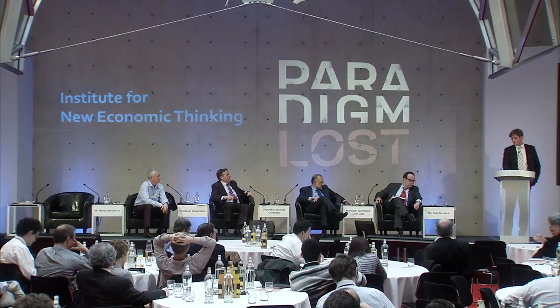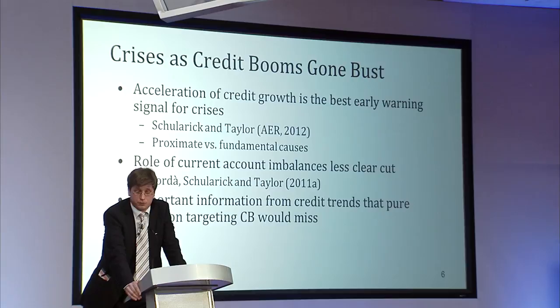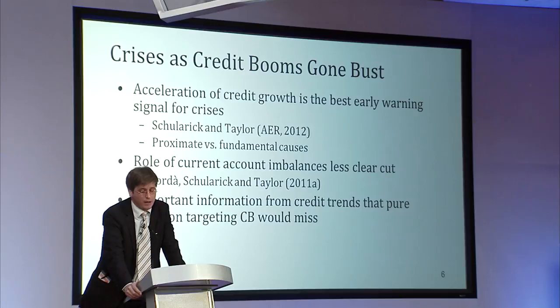The last point is some tentative conclusions about remedies — because we are not yet far enough to avoid financial crises. Crises as credit booms gone bust: acceleration of credit growth is the best early warning signal for crises. Put differently, we have a good idea about the proximate causes of financial crises — credit growth and acceleration of lending. We do not have the same understanding of the fundamental causes, i.e., why does credit growth suddenly accelerate. There might be a role for monetary policy, or it might have to do with capital flows.